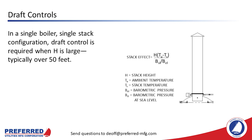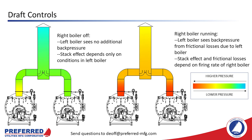When are draft controls required? In a single boiler, single stack configuration — which is ideal — draft controls should be considered when the stack height is over 50 feet. Because stack effect is worse in cold ambient conditions, this could be extended to 75 feet in areas without cold weather. When in doubt, consult your burner manufacturer, who is responsible for combustion performance and will tell you when draft controls are needed. Multiple boilers connected to the same stack should always include draft controls, because the firing of one boiler changes the draft conditions of the others and there is no interconnection between boiler controllers.